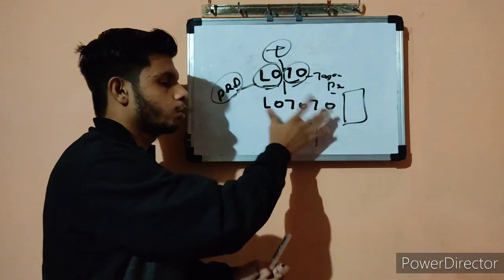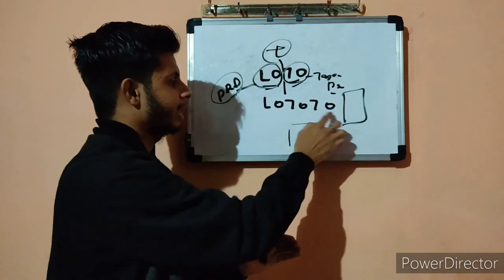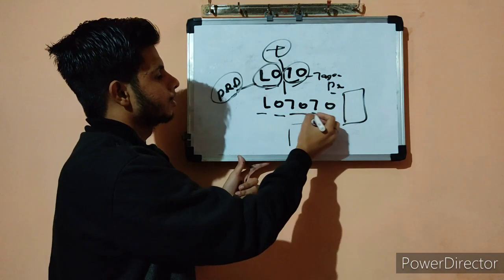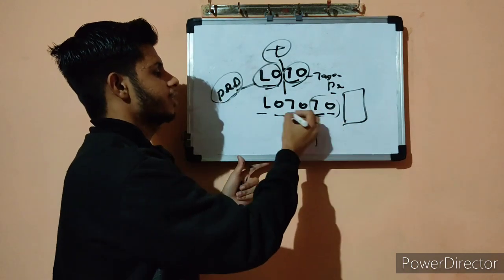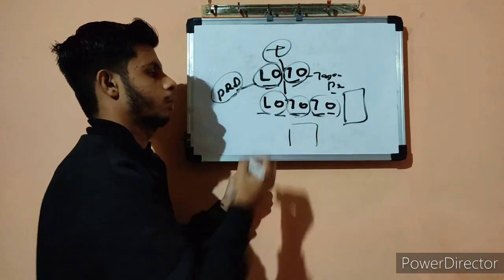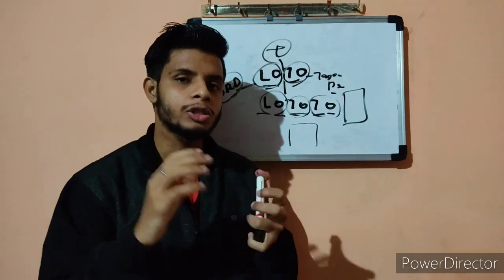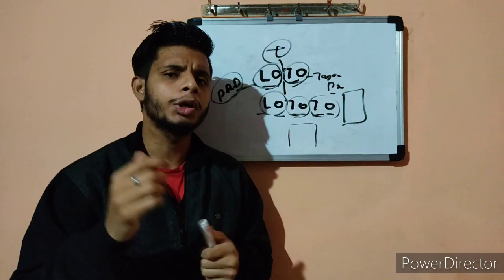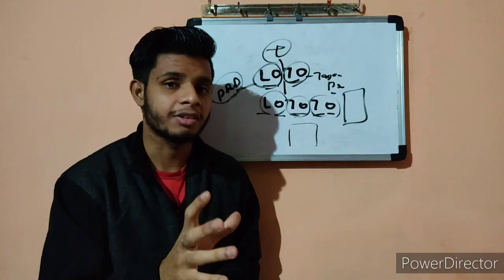Now when we come to the LOTOTO that is pretty much similar to that actually, only one element is extra. Lockout, tagout, and tryout. What is it? This is tryout, this is tagout, and this is lockout. So tryout means once you have implemented the lockout procedure, lockout and tagout procedure, you need to just check it, whether it is effective or not.